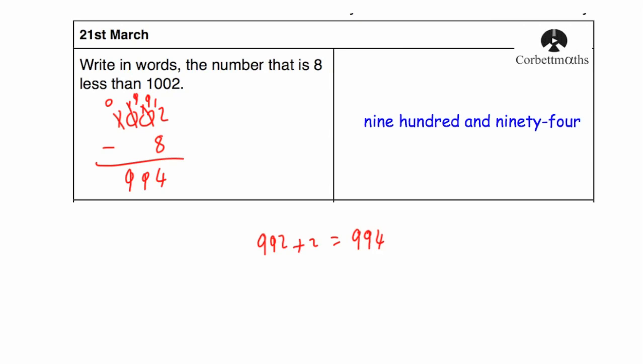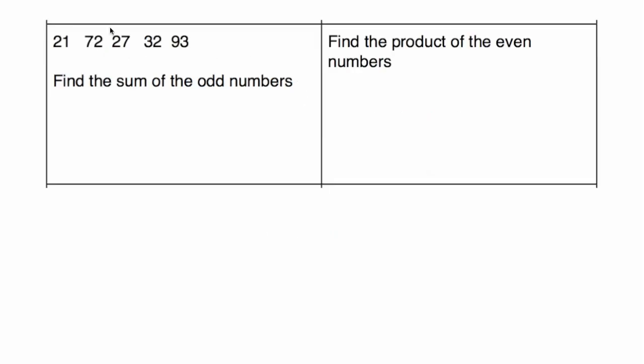Our next question says, we've got a list of numbers, 21, 72, 27, 32 and 93. And we've been asked to find the sum of the odd numbers. So let's have a look at the numbers.